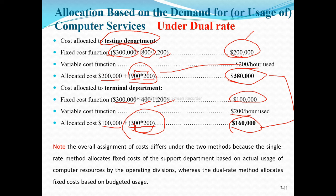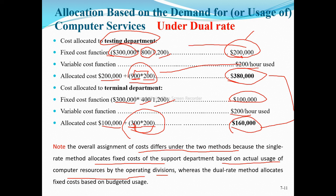Note that the overall assignment of costs differs under the two methods because the single rate method allocates fixed costs of the supporting department based on actual usage, while the dual rate method allocates fixed costs based on budgeted capacity.